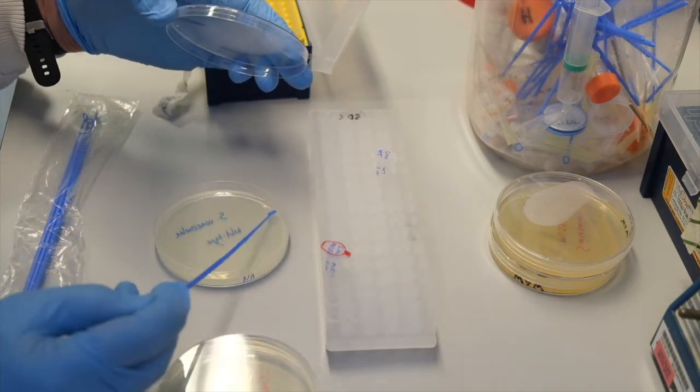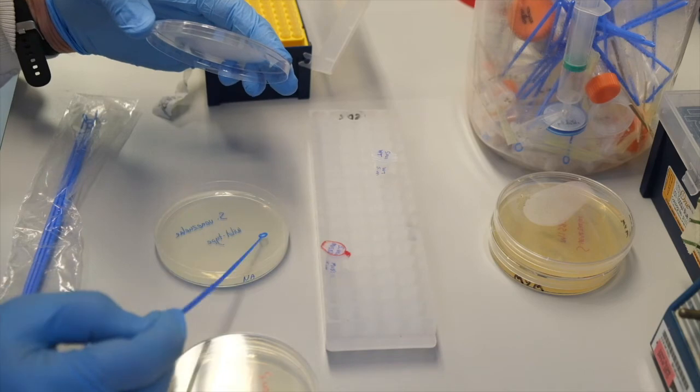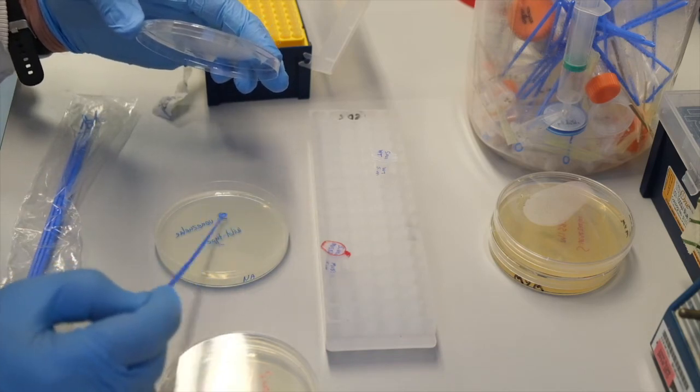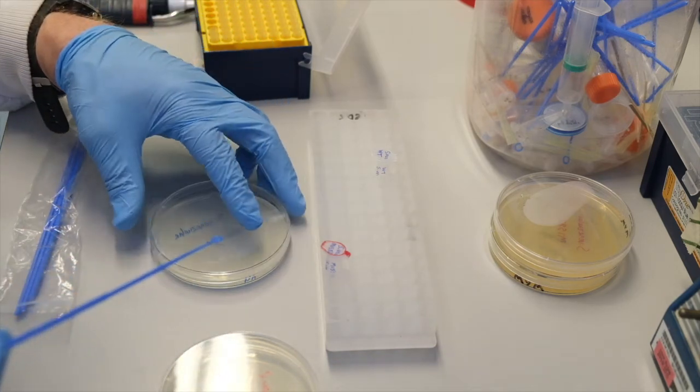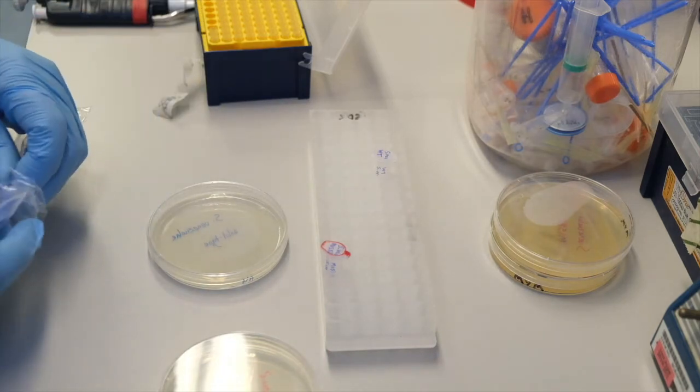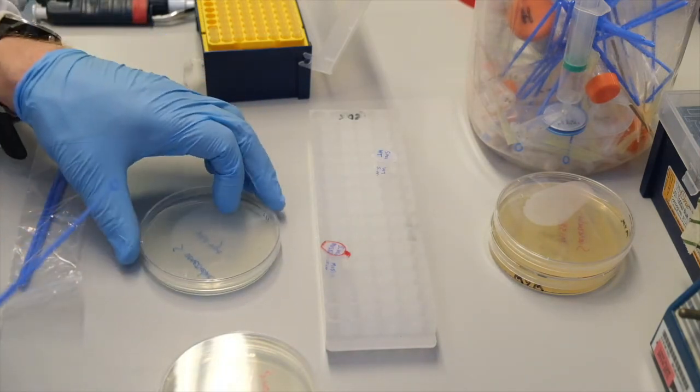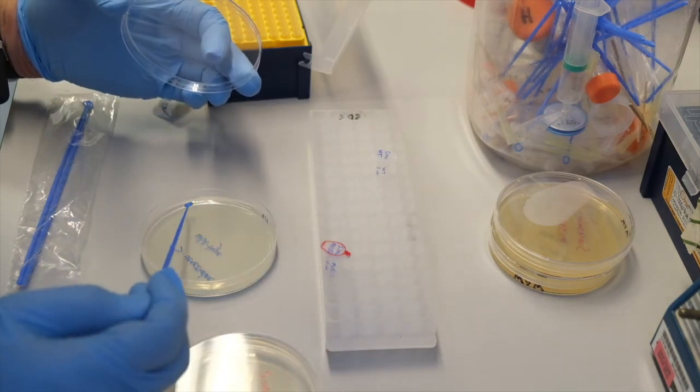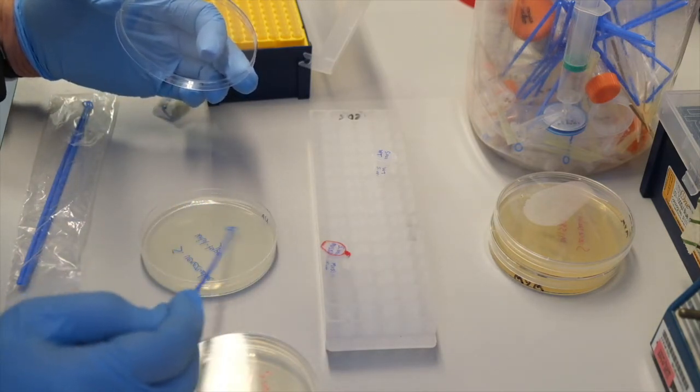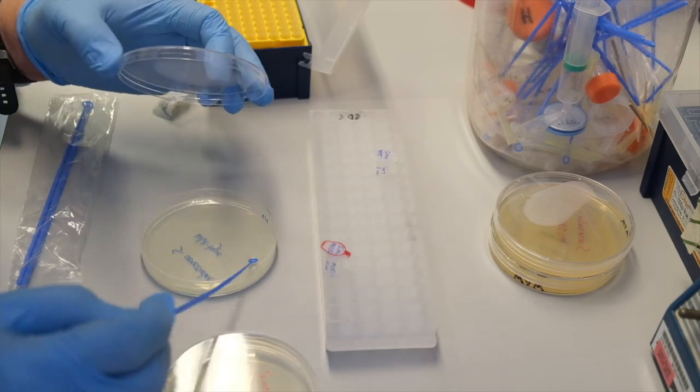Rotate the plate and do the second set of streaks, crossing the first streaks. Finally, fill in the rest of the plate using the third sterile loop.